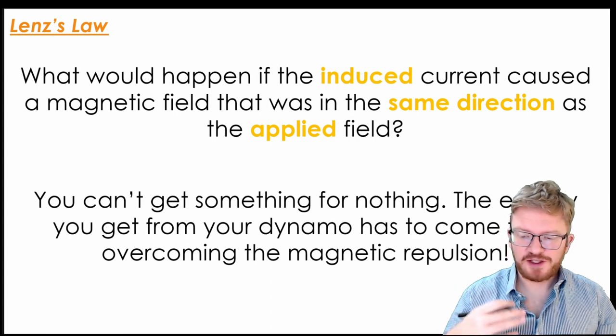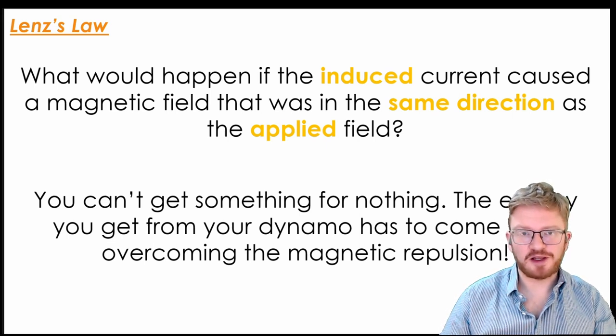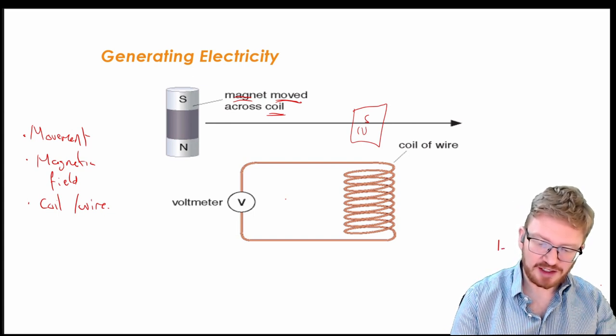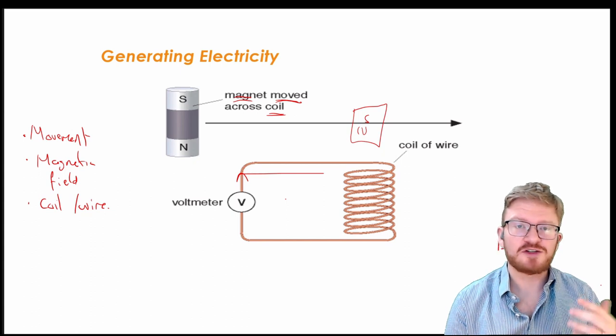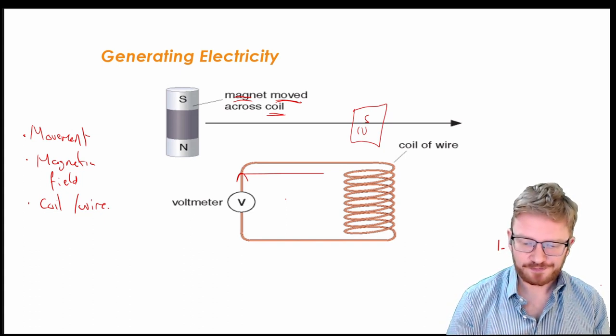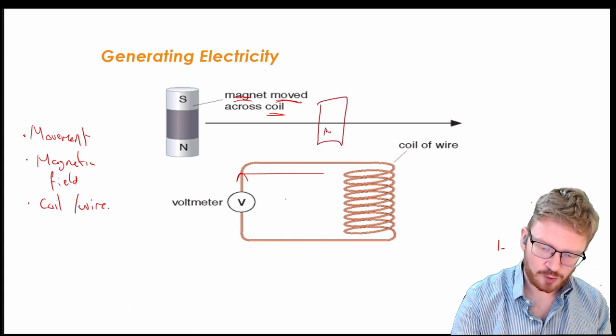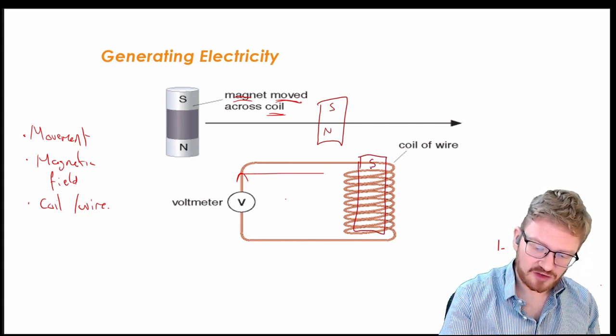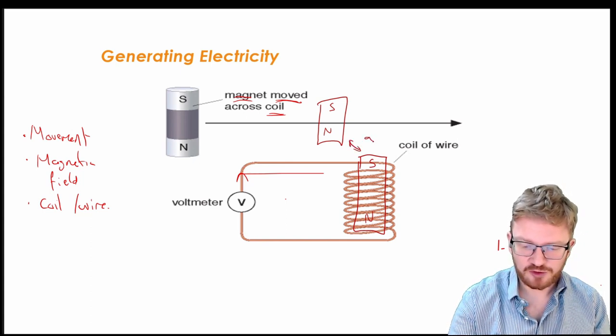So what would happen if the induced current that we're creating caused a magnetic field that was in the same direction as the applied force? So what do I mean by that? Well, let's go all the way back to this diagram. What I can say is that I am going to be creating some kind of current in this coil of wire. Now, what happens when I have a current in a coil of wire? Well, what I get is it starts to act like an electromagnet. So let's say, what would happen if, as I brought my magnet near, so I have a north pole there and a south pole there, what would happen if the current that I induced meant that I had a south pole here and a north pole here? Well, if you think about that, these north and south poles, they're going to mutually attract each other.